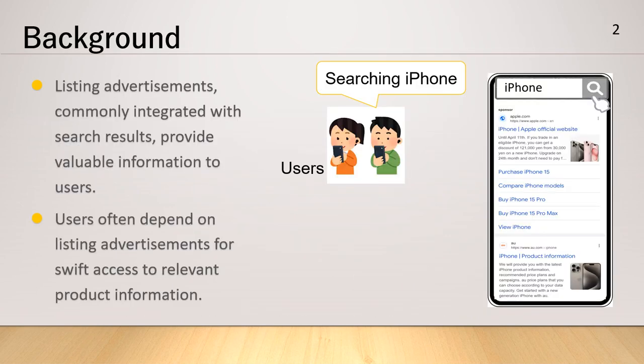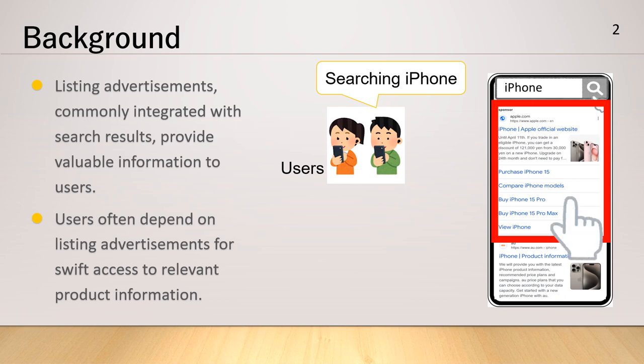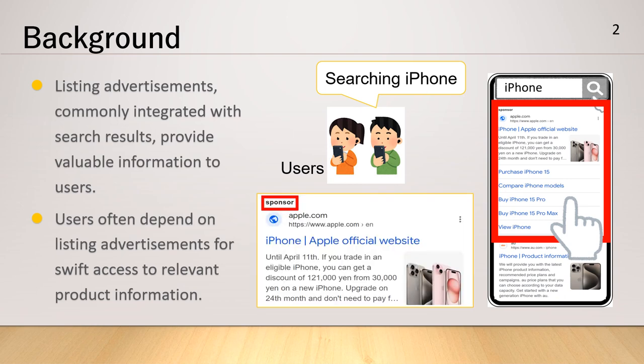In this study, we examined the significance of listing advertisements, which are frequently integrated with search results. These listing adverts provide valuable information to users, although their relevance may not always be apparent at first glance. For example, when searching for a specific product like an iPhone, users often rely on listing advertisements for quick access to relevant information. Thus, listing advertisement plays a crucial role in users' search experience.